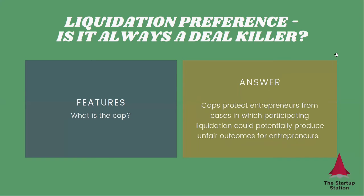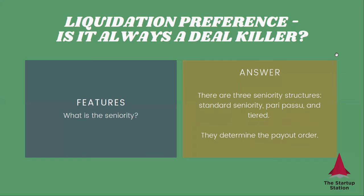And finally, I want to talk about seniority. So what is seniority? If you have investors coming in in different rounds, how do you determine when they will get paid? There is a standard seniority where the later you come, the more senior you are — so Series B investors are more senior than Series A investors, more senior than seed investors, et cetera. There is a pari-passu seniority where everybody has the same seniority, and then there is tiered seniority, which is where you do something custom. That also determines the payout order, so it's important when you're thinking about a liquidation preference.